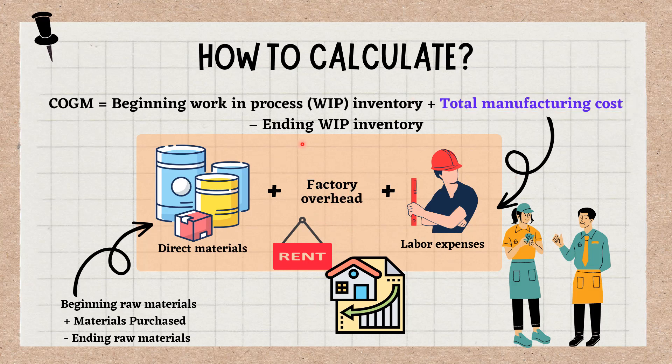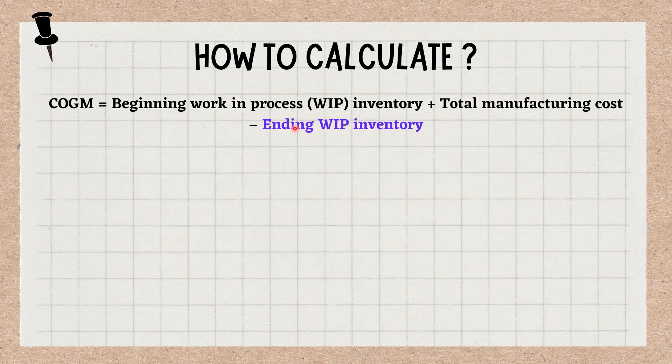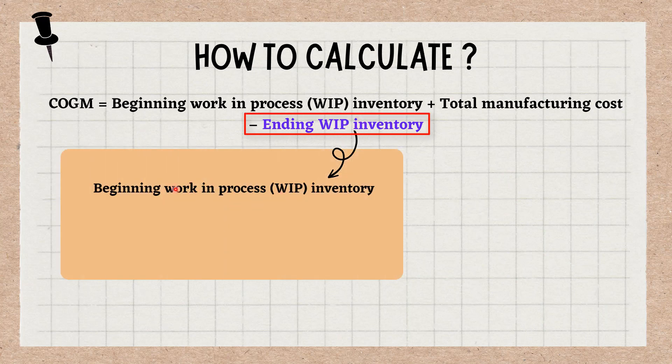You can calculate the ending work in process inventory by adding the beginning work in process inventory to the manufacturing costs and subtracting the cost of goods manufactured.